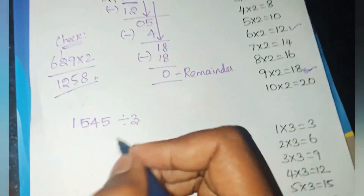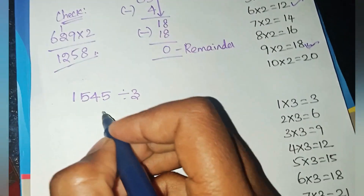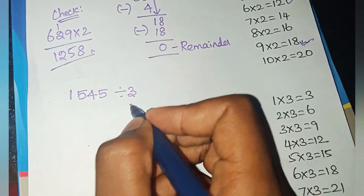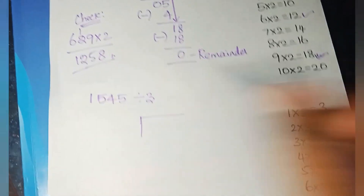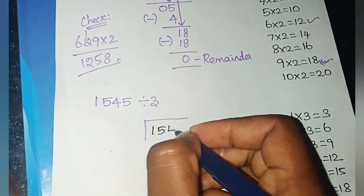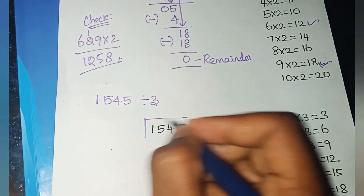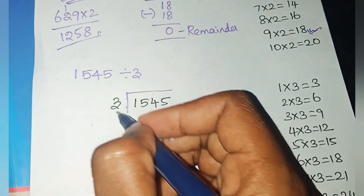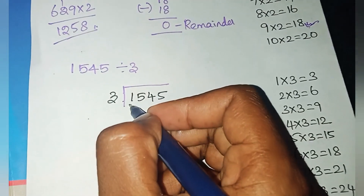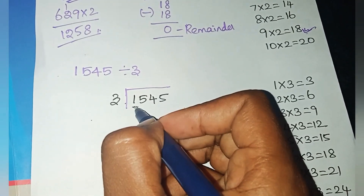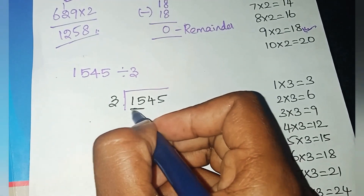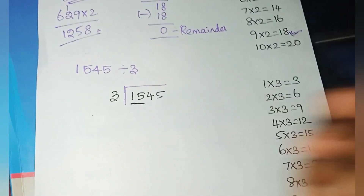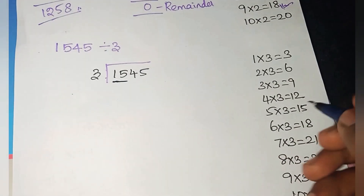Next example. If we take 1545 divided by 3. For your reference, I wrote the 3 times table here. What is the first number? 1. It is lesser than 3, so you should consider the second digit also. The combined number is 15. How many 3's are 15?